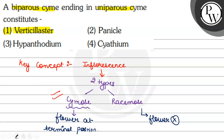Let's see why the other options are wrong. Option 2, panicle, is wrong because panicle is a racemose type of inflorescence in which flowers are present on the main axis. Option 3, hypanthodium, is wrong because hypanthodium is a fleshy receptacle with an opening at the top and flowers on the inner wall side. Option 4, cyathium, is also wrong because cyathium is a cup-shaped involucre-bract inflorescence in which nectar is present along the rim. So the correct and final answer is option 1 — verticillaster.